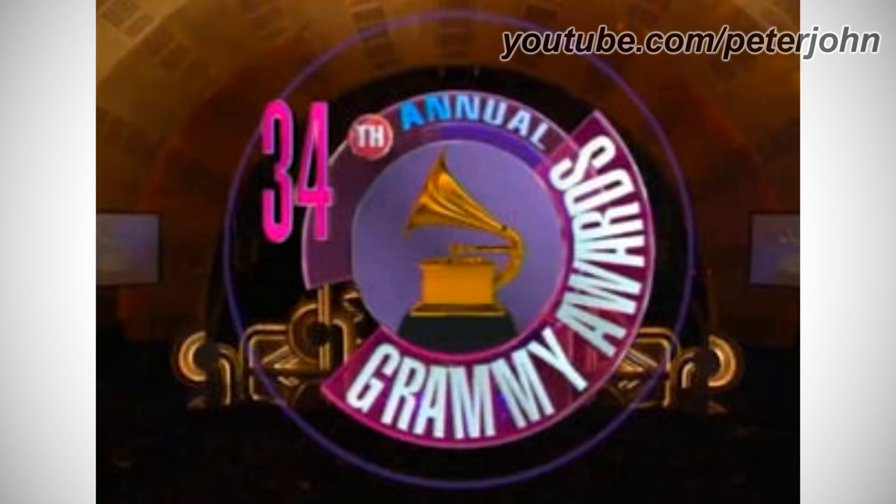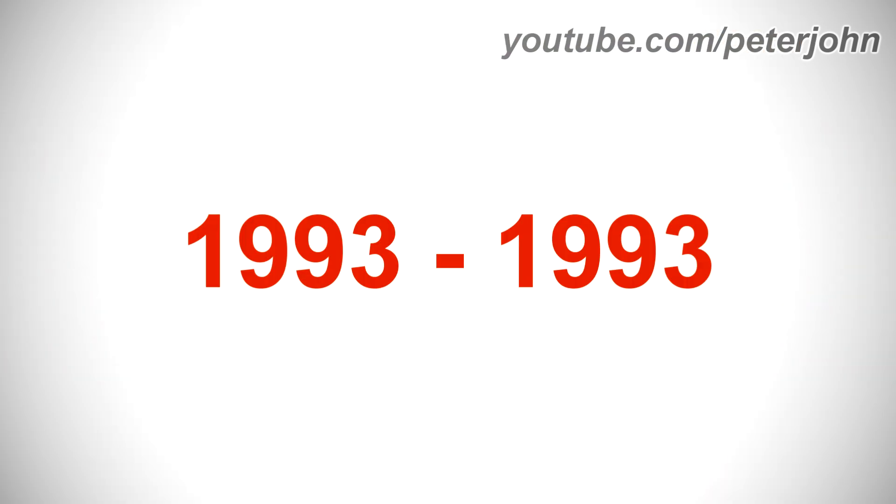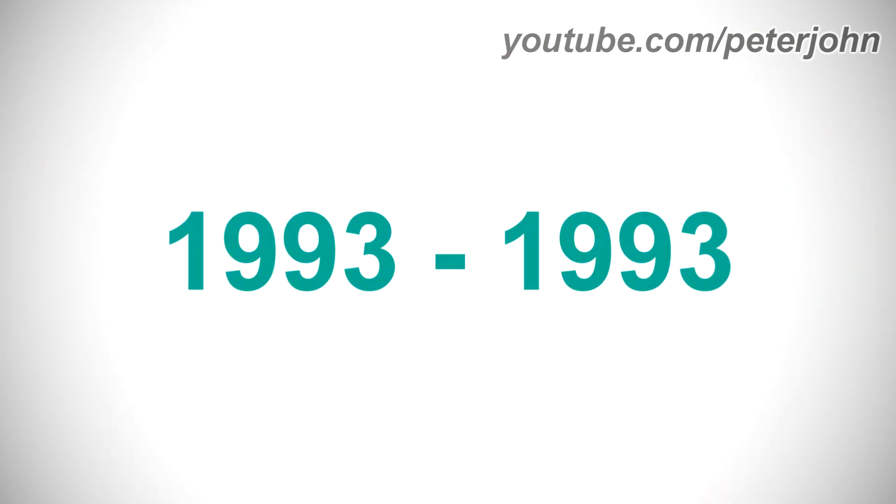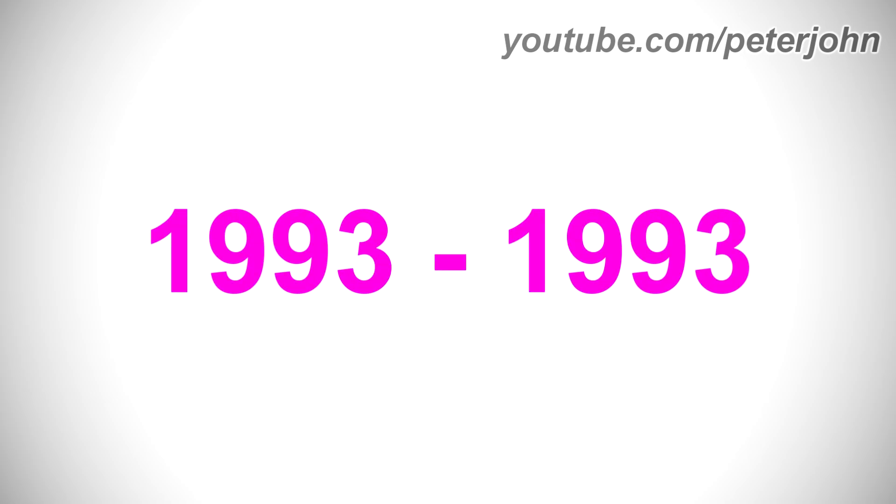1992 to 1992: the word '33rd' was replaced with '34th,' the circle behind the 'th' part is now red, the word 'Annual' is now in blue text, the circle behind the Grammy Award is now fully purple, the Grammy Award is now fully golden, the shape under the circle is now pink, and the words 'Grammy' and 'Awards' are now in white text.